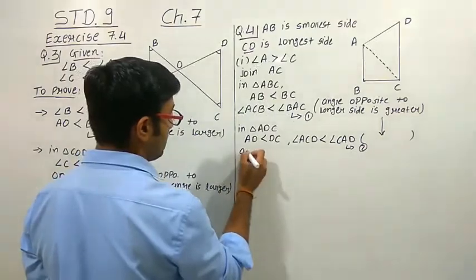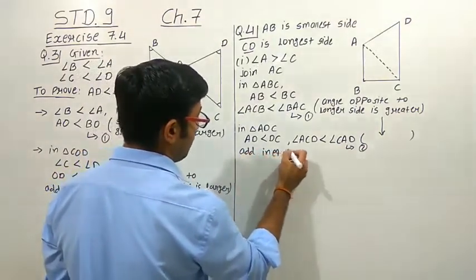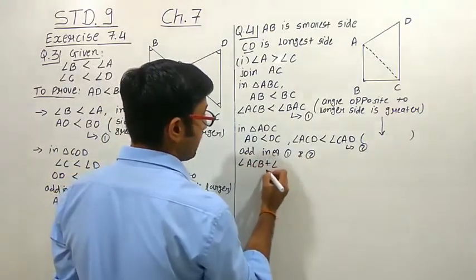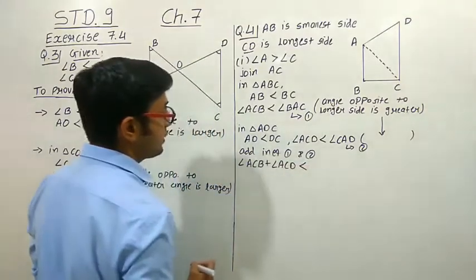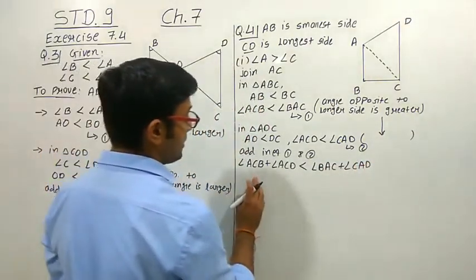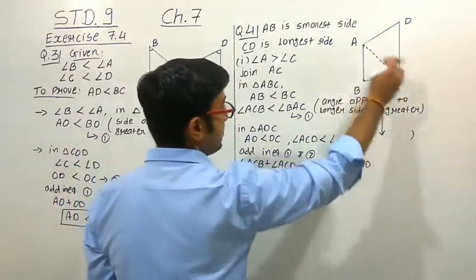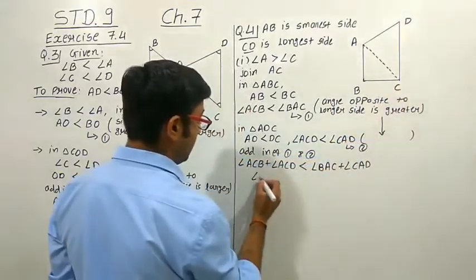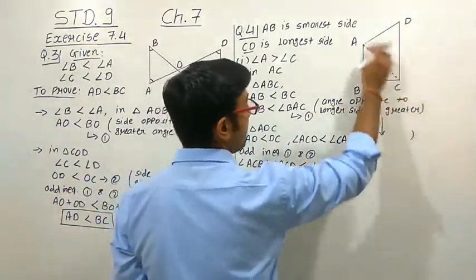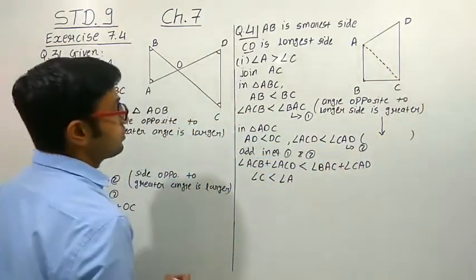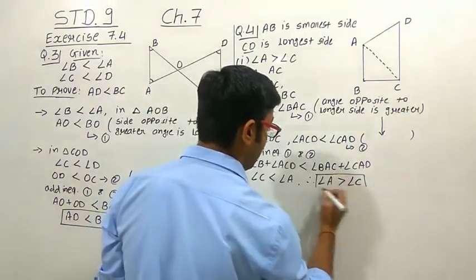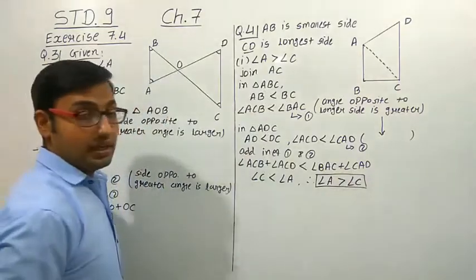When we add inequalities 1 and 2, left hand side gives angle ACB plus angle ACD, which is the total angle C. Right hand side gives angle BAC plus angle CAD, which is the total angle A. So angle C is less than angle A, meaning angle A is greater than angle C. This is the first required result.